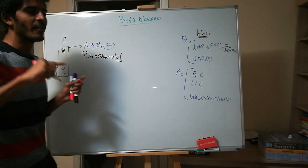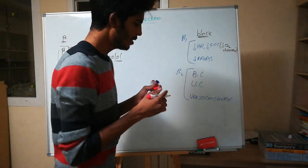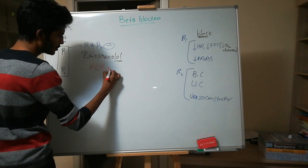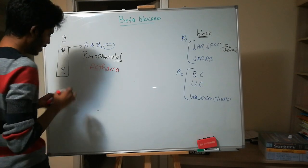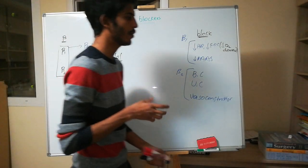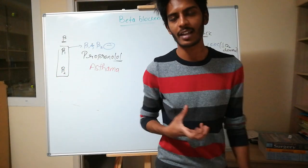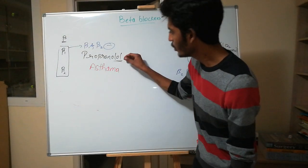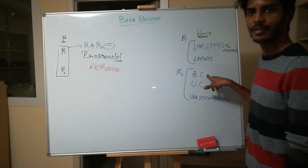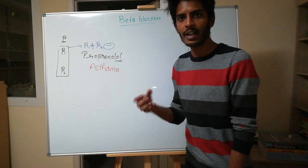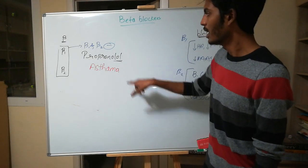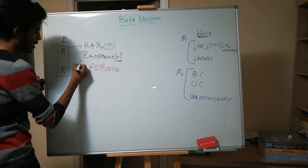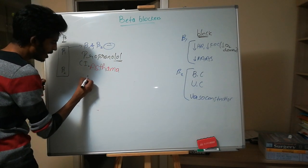Let's understand when we should NOT use propranolol. Take a patient with asthma — one of the important pathologies of bronchial asthma is bronchoconstriction. The patient already has bronchoconstriction, and if we use propranolol, further bronchoconstriction will occur. The patient will be at risk, which is why propranolol is contraindicated in bronchial asthma.